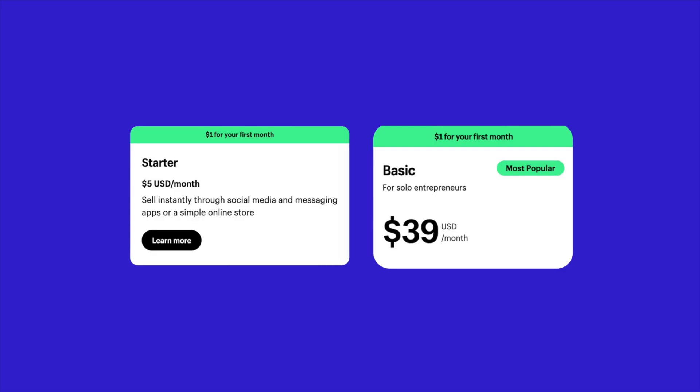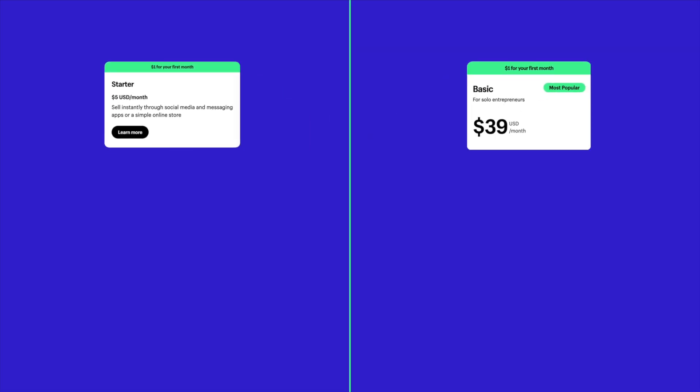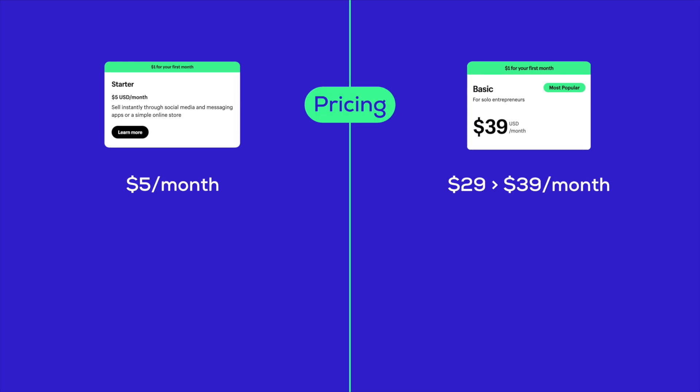Now let's talk about what sets these plans apart. Starting with pricing, the Shopify Starter plan is highly affordable at just $5 monthly, while the Basic plan is priced at $39. Please note that pricing may vary based on your country. However, if your business is located in the United States, the Basic plan will be $29 per month if you pay yearly and $39 per month if you pay monthly.